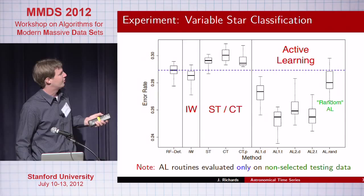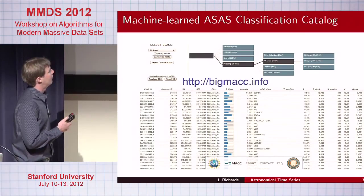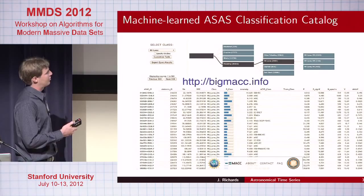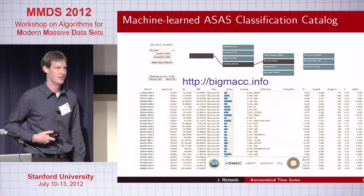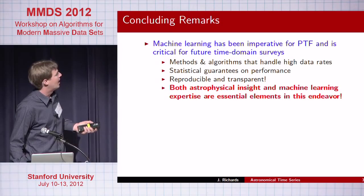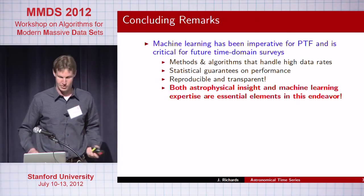We recently put out a catalog of the All Sky Automated Survey — a classification into about 30 different types of variable star. It's kind of the first catalog of its kind to give a probabilistic classification of astronomical variability, and we also have new things such as anomaly scores. Machine learning has been critical for all of this, but both astrophysical insight and machine learning are essential, and having collaborations between different fields is really imperative.